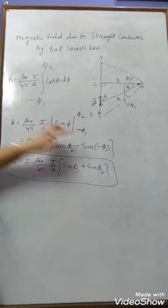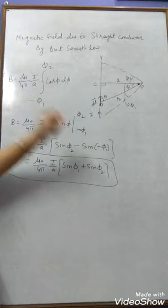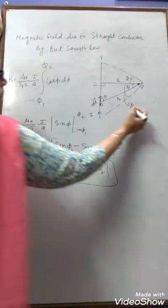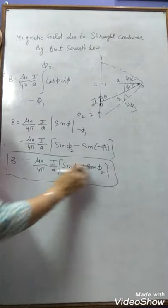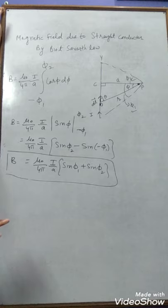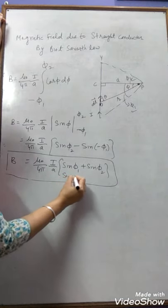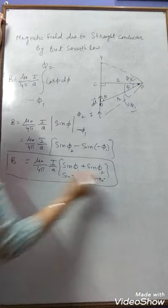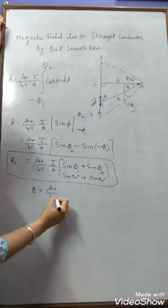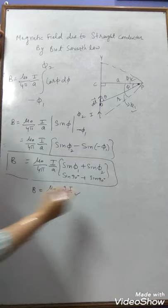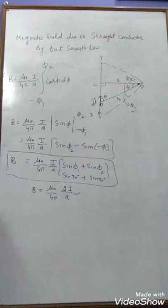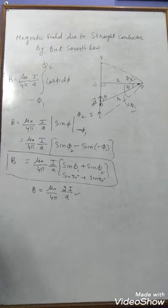If the conductor is infinite in length, the maximum value of the angles φ₁ and φ₂ is 90°, and sin90° = 1. So B = (μ₀ / 4π) × (2I / A). This is the magnetic field for an infinite straight conductor. So we now have three formulas from Biot-Savart's law: at the center of a coil, at the axis of a coil, and due to a straight conductor — both finite and infinite length.